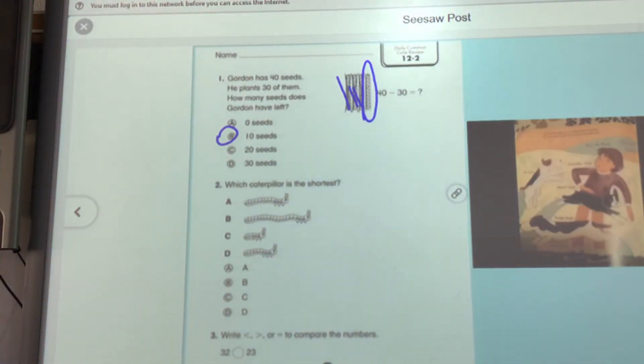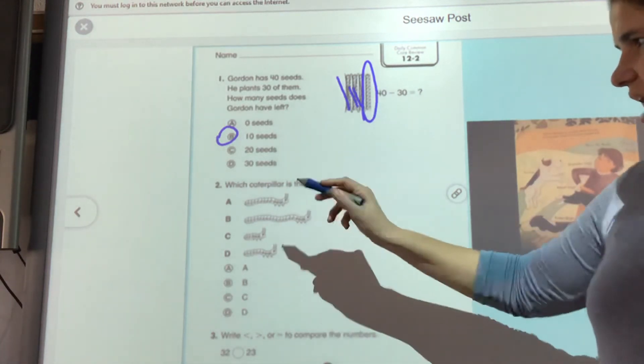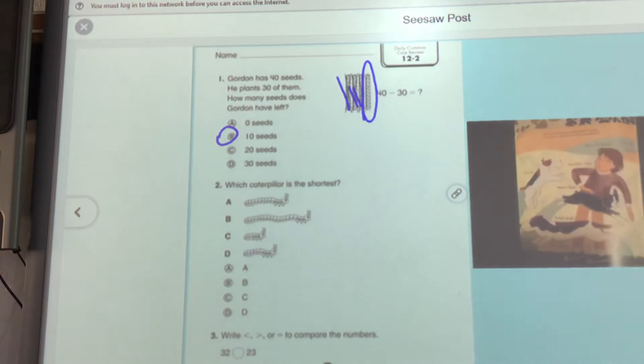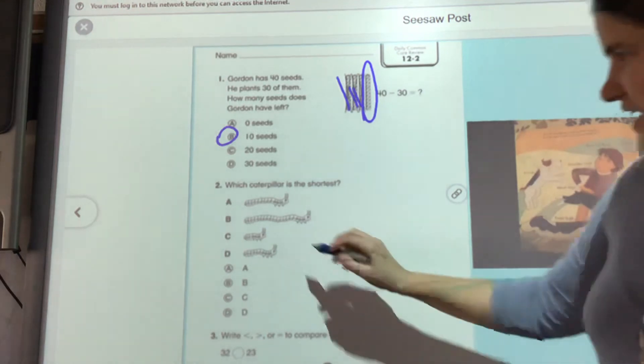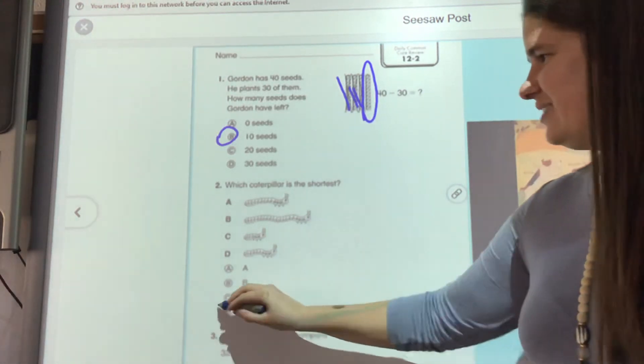Well, look at the little caterpillars. Which one is the shortest? Which one's the shortest? A, B, C, or D? Yell your answer out if you're at home. I can look at those and I can see, oh, he's so cute. Little C is the shortest.